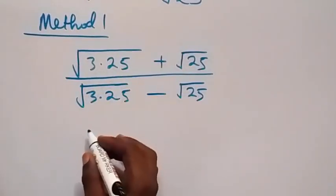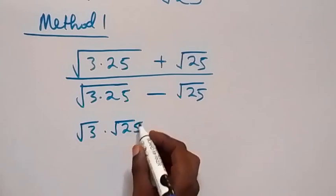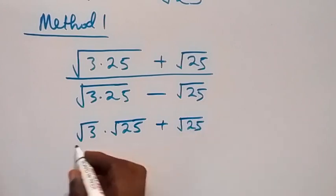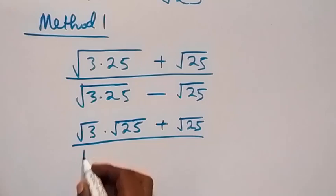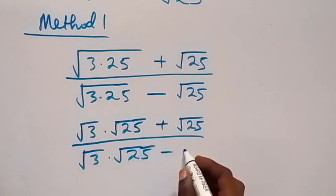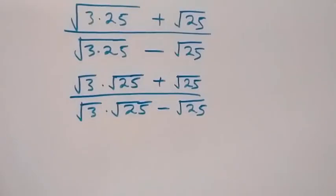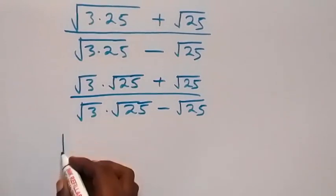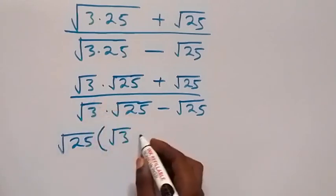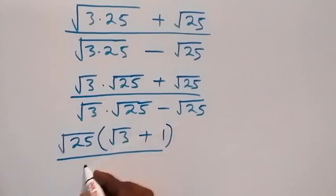Next we can separate this into two roots: root 3 times root 25, then plus root 25, divided by root 3 times root 25, then minus root 25. Then we can factor root 25 out since it's common, so we have root 25 out, then left with root 3, then plus 1, divided by root 25 common.